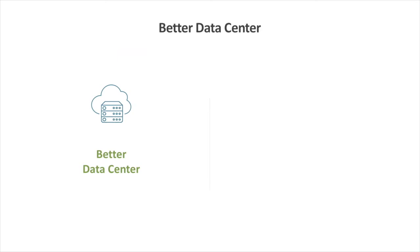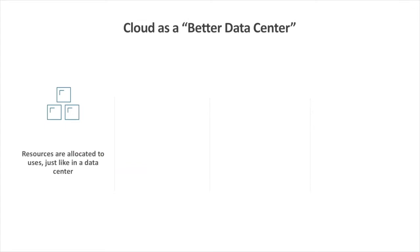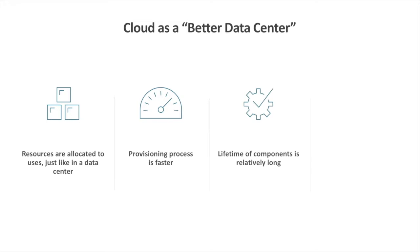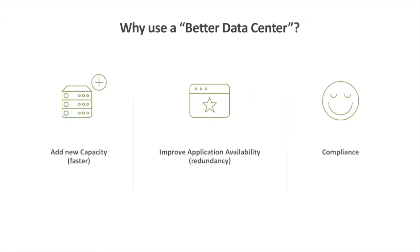Let's first look at the cloud as a better data center. Resources are allocated to uses just like they are in a regular data center, but the provisioning process for new resources is significantly faster. The lifetime of the resources you create are relatively long — usually measured in days, weeks, months, or even years. However, even with a faster provisioning process, traditional capacity planning techniques are still important and still apply. Since we can add new capacity faster, we can build and scale our applications easier in the cloud.